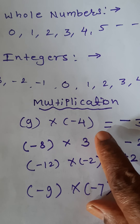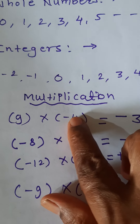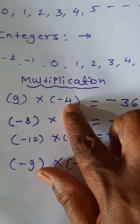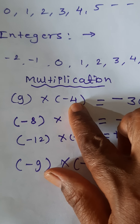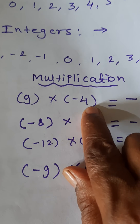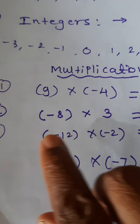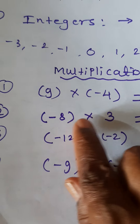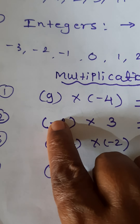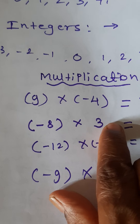Here I have taken some examples, then we start the practice set. See here: 9 multiplied by negative 4. These are integers — 0, all positive numbers, and all negative numbers. One number is positive and one is negative. So, as per our rules of signs, when one number is positive and one is negative, the product is negative. So 9 × 4 = 36, give negative sign — negative 36.